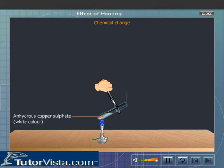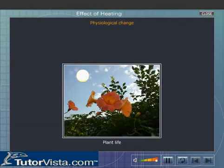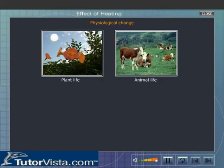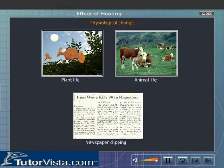Physiological change: Heat energy produces physiological effects in both plant and animal lives. Plants and animals react to changes in temperature. Most living things cannot tolerate high temperatures.